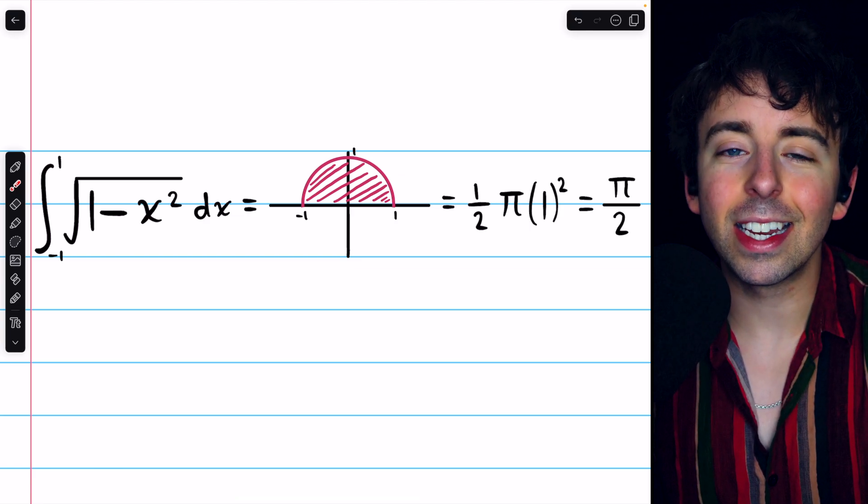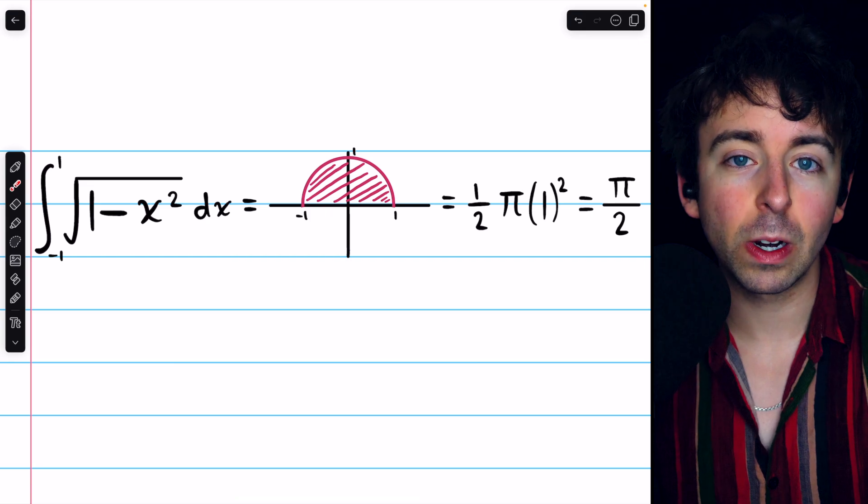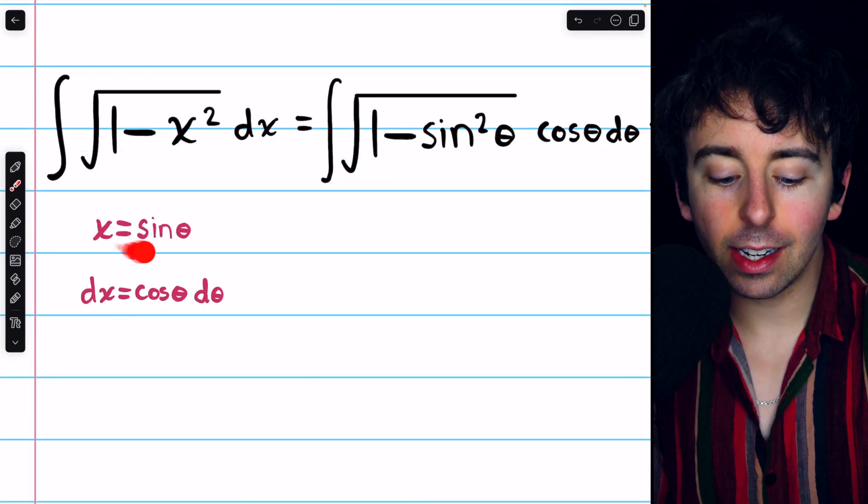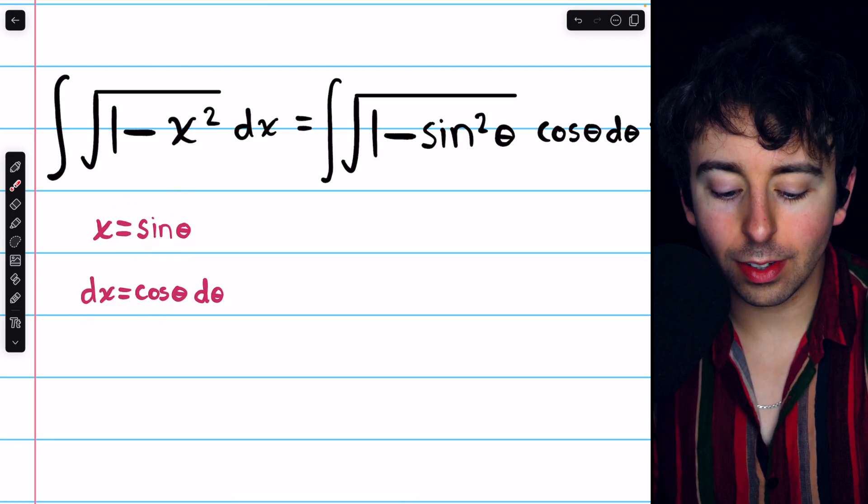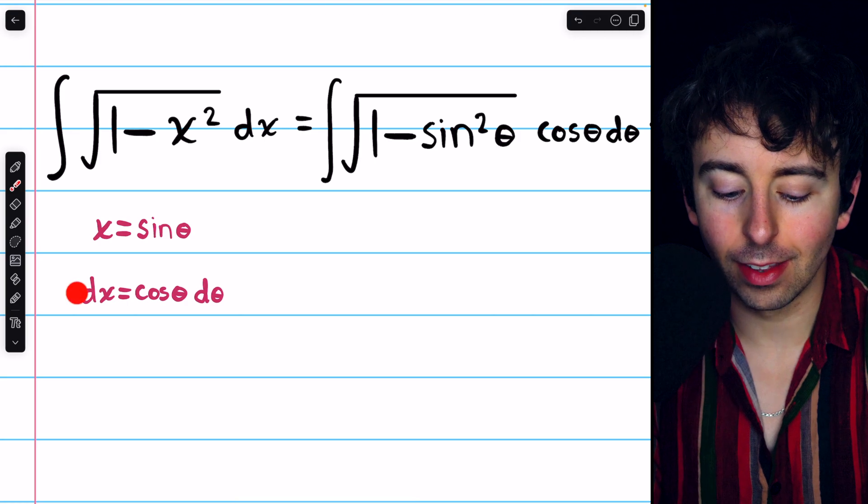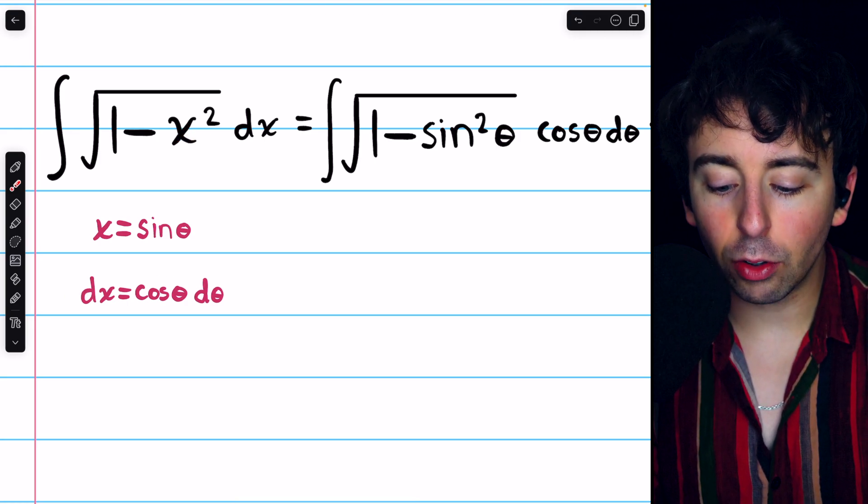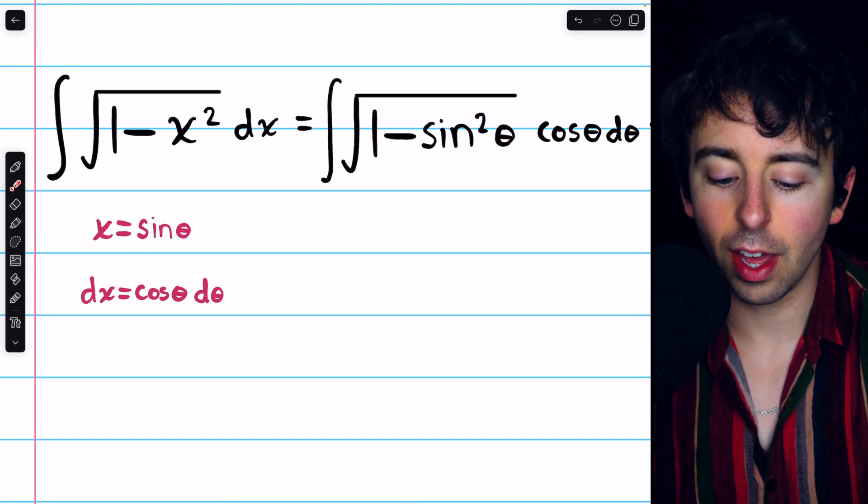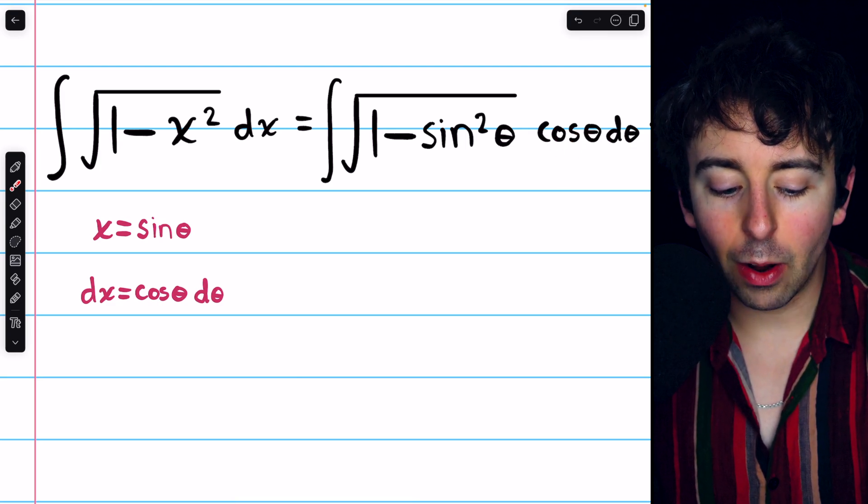But let's return to the indefinite case and see how we can solve this problem using a trigonometric substitution. We can actually clean this integral up nicely by letting x equal sine theta, and then dx would equal cosine theta d theta, taking the derivative on both sides. Then we can replace x squared with sine squared theta, since x equals sine theta. dx, of course, we replace with cosine theta d theta.